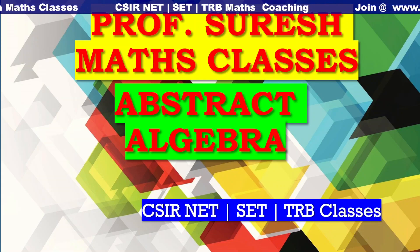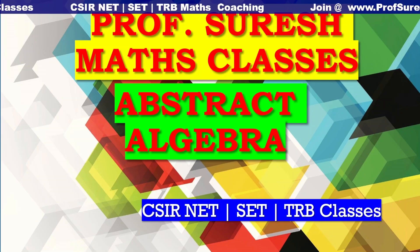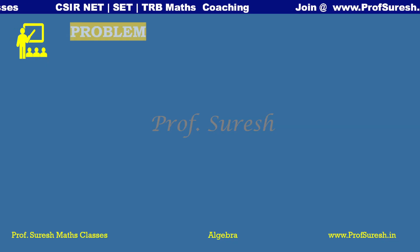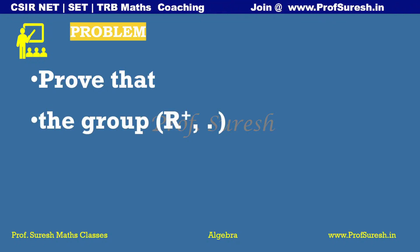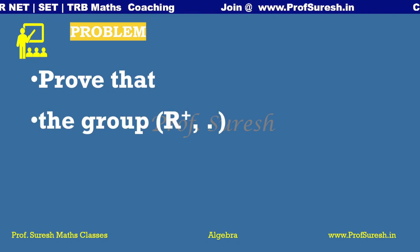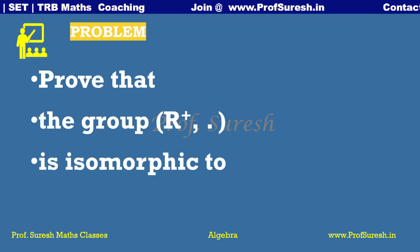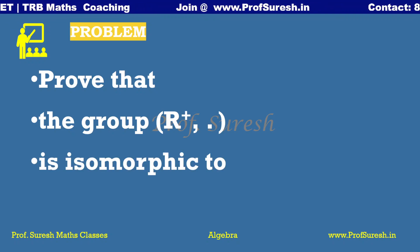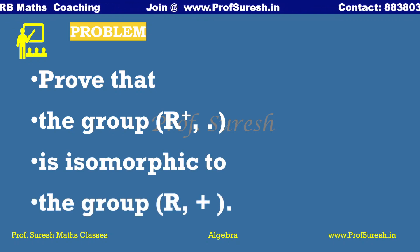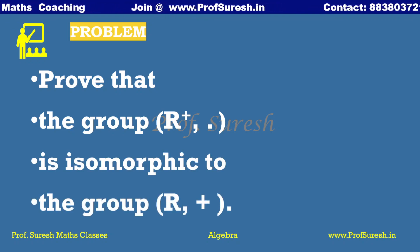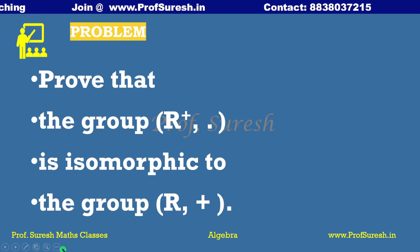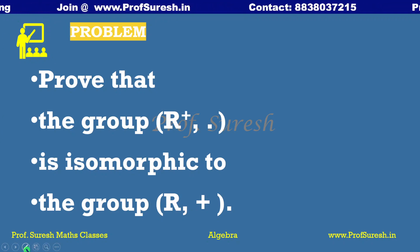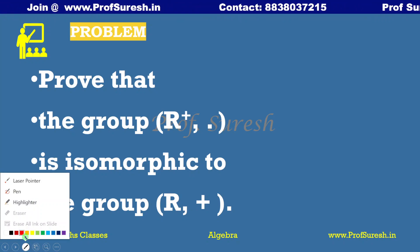Welcome to Professor Suresh's Math Classes, Abstract Algebra. Prove that the group R plus under multiplication is isomorphic to the group R under addition. R plus is the set of positive real numbers and the operation is ordinary multiplication.